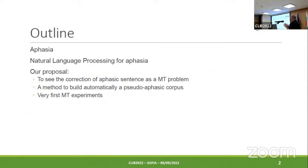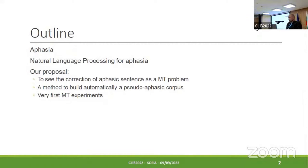The outline of this work about the link between natural language processing and aphasia is the following. I am going first to explain what is aphasia and all the negative impact on the patients. I will explain how natural language processing can be used for aphasia, and I will describe our proposal — to see the correction of aphasic sentences as a machine translation problem. For that, we propose a method to build automatically a pseudo-aphasic corpus, and I will present the very first machine translation experiments.